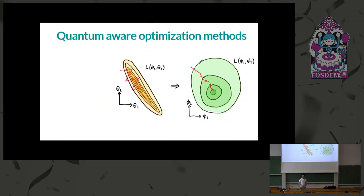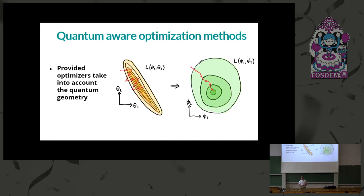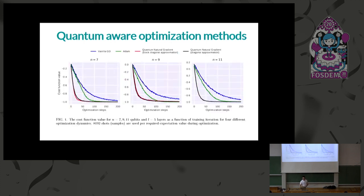We're also working on optimization better suited for the quantum landscape, such as the quantum natural gradient. This takes into account what the cost landscape of your variational circuit looks like to ensure better convergence. It's a quantum equivalent to the natural gradient, which takes into account classical Euclidean space during gradient descent. Quantum natural gradient takes into account quantum geometry and in general leads to much better convergence with variational algorithms. This plot compares gradient descent versus Adam versus quantum natural gradient descent for a couple of circuits.